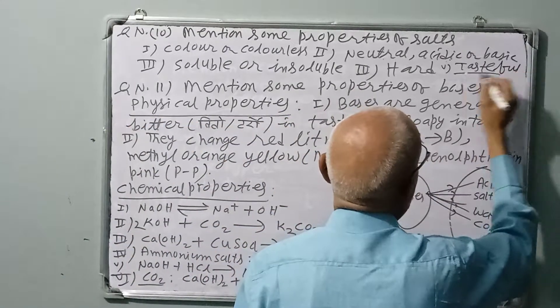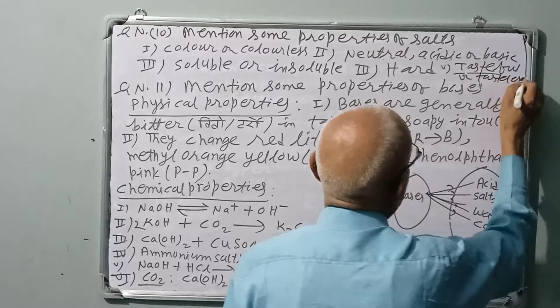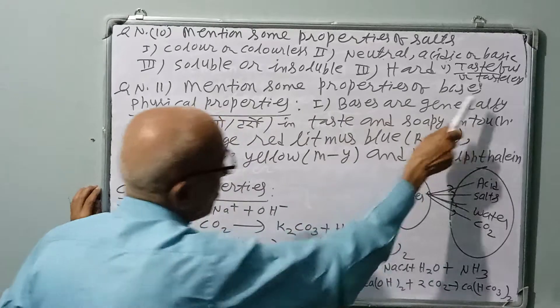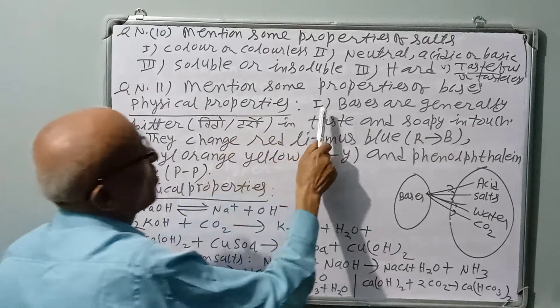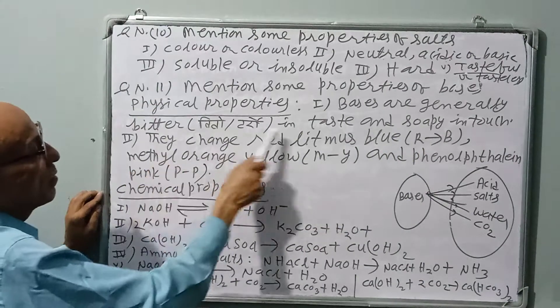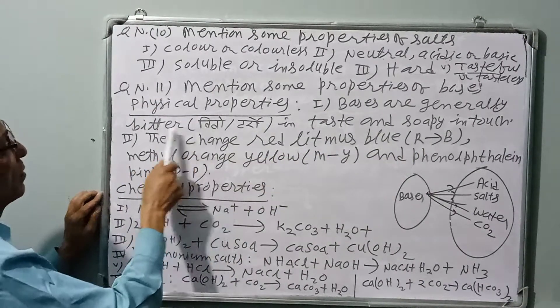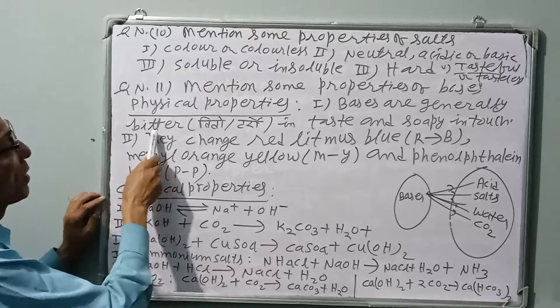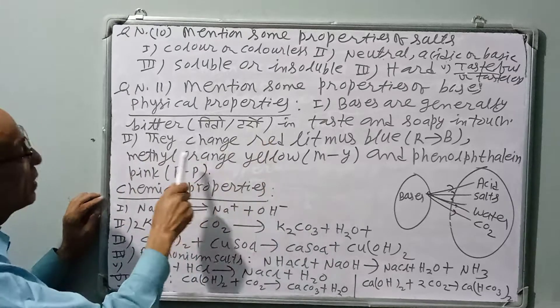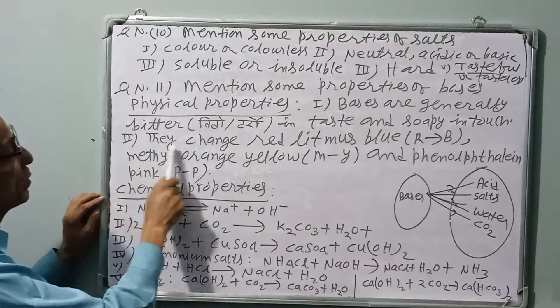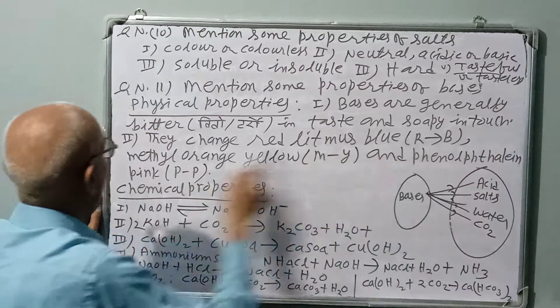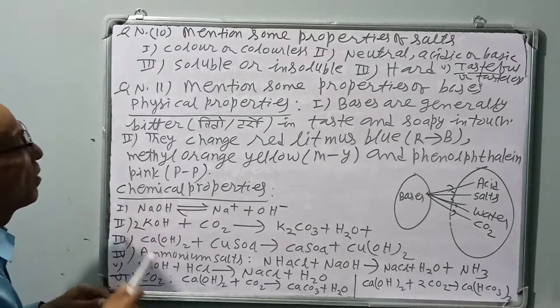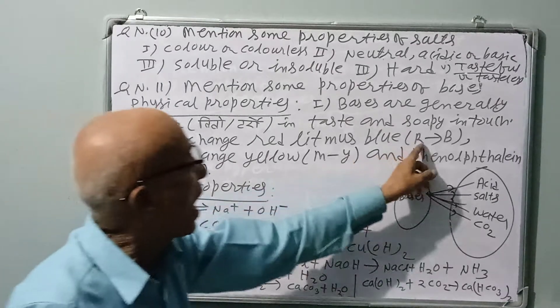Mention some properties. Physical properties: Number one, bases are generally bitter in taste and soapy in touch, but some bases should not be tested. Number two, they turn red litmus blue.